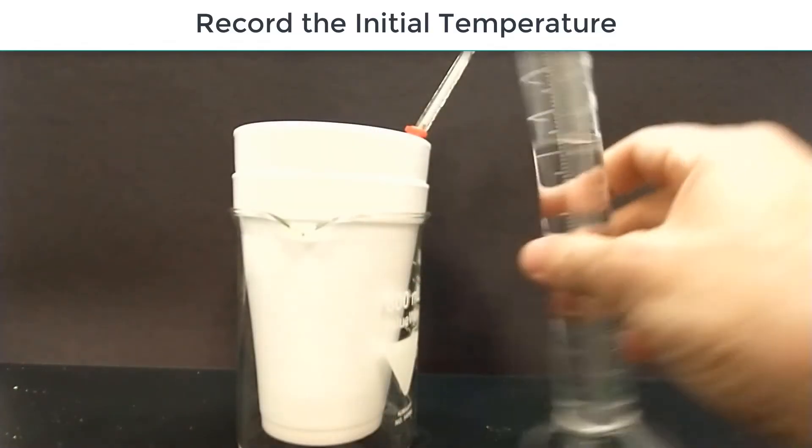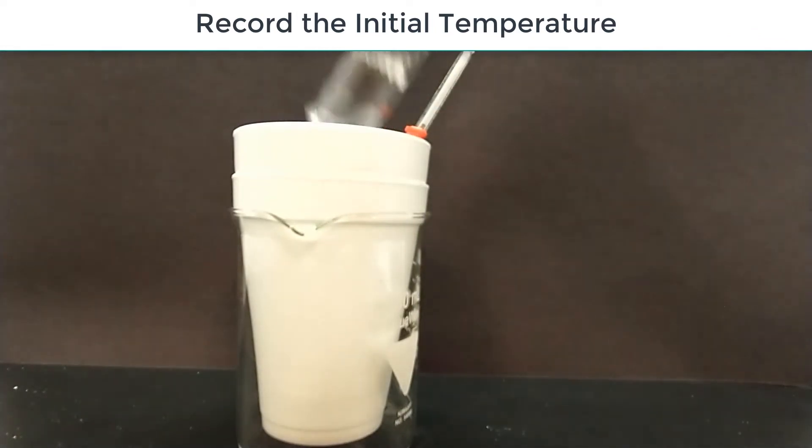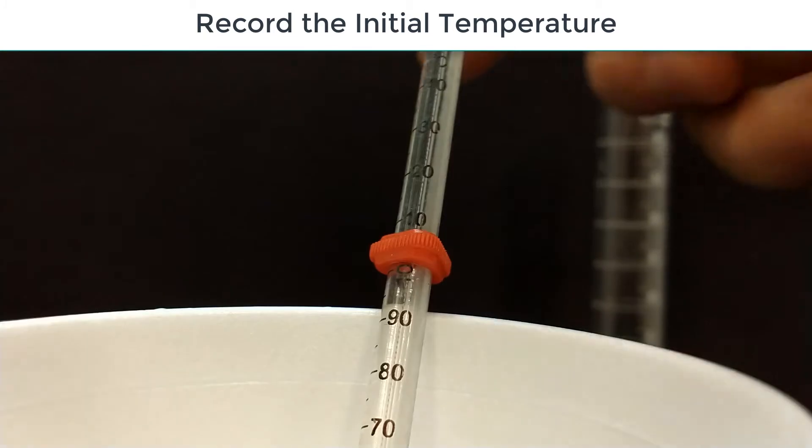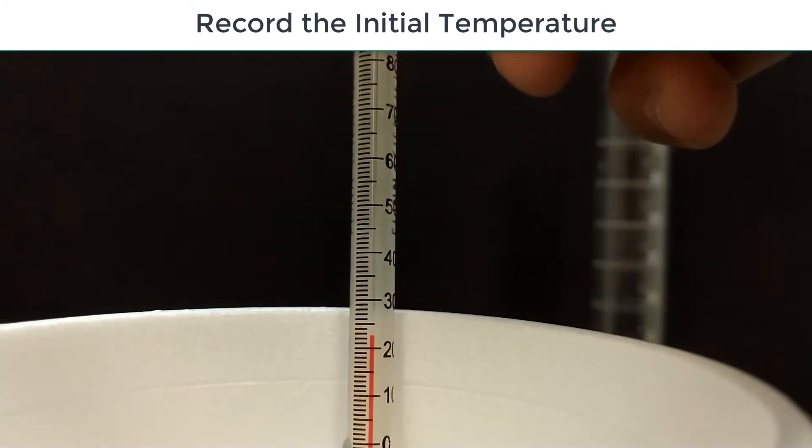The next step you're going to carry out is to pour that ammonia into your calorimeter and record its temperature. So we pour it into the insulated cups, give it a little mix, and then record its temperature.